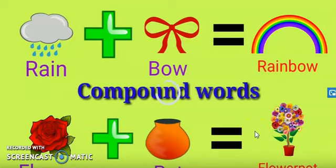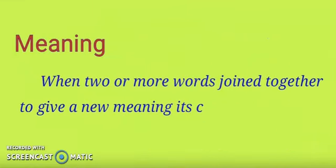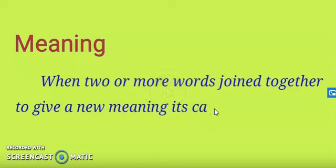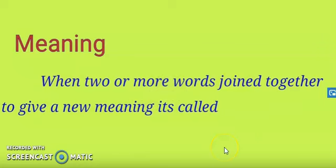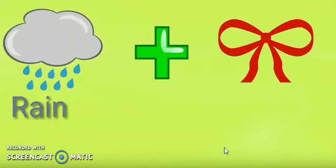Okay dear children, so today we will start with compound words. As you can see, compound words means the words which are formed after combining two words. That are called compound words. You can see what is the meaning of compound words: when two or more words joined together to give a new meaning, it's called compound words. Jab do se zyadha words join karke ek naya word banta hai, to wo kya kehlata hai? What is that called? Compound words.